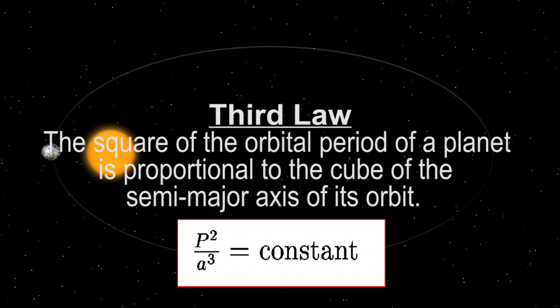Third law: the square of the orbital period of a planet is proportional to the cube of the semi-major axis of its orbit — that is, P² is proportional to a³.